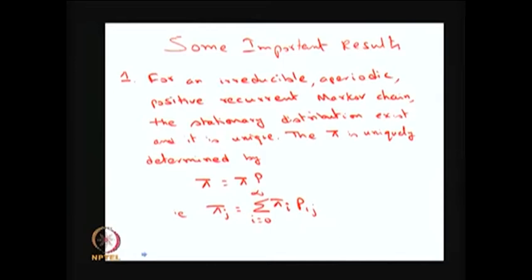Positive recurrent means the chain is recurrent — that is, with probability 1 the system starting from one state will return to that same state — and additionally the mean recurrence time is finite. If these three conditions are satisfied by any time-homogeneous discrete-time Markov chain, then the stationary distribution can be computed using pi equals pi P with summation equal to 1, and the solution is unique.